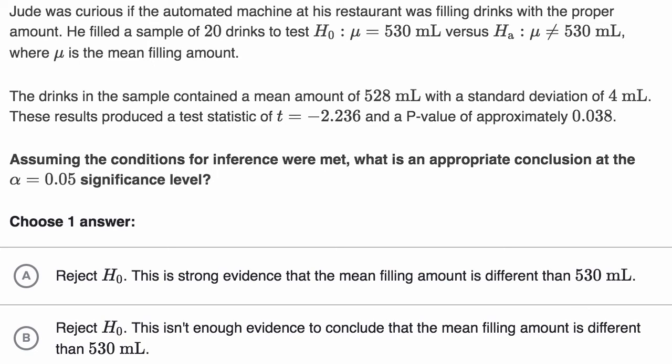Now let's work through this together. Let's remind ourselves what's going on. You have some population of drinks and we care about the true population mean. You have a null hypothesis that the true mean is 530 milliliters, but then there's the alternative hypothesis that it's not 530 milliliters. So to test your null hypothesis, you take a sample. In this case, we had a sample of 20 drinks.